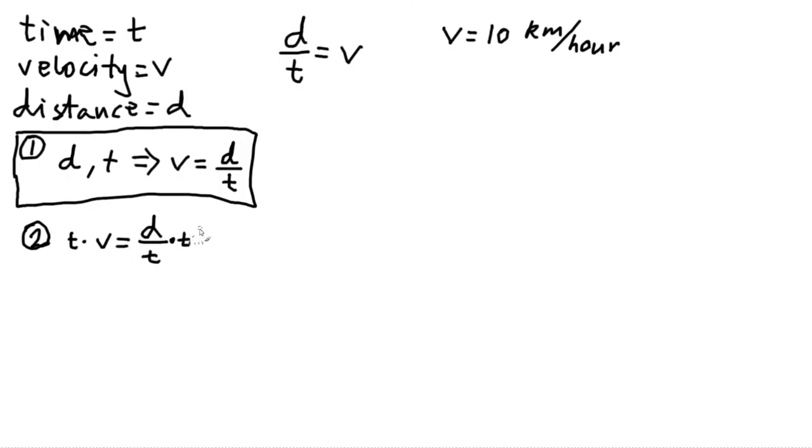So what does that give us? So the t on the right hand side cancel out with this one. So we're left with distance equal to time times velocity. So in other words, if we know the time and the velocity of an object, then we can calculate the distance that it travels. So that's relation two.